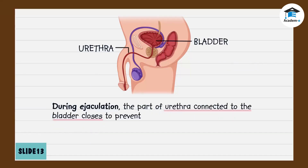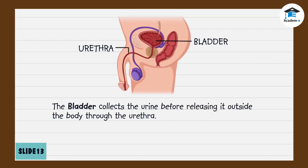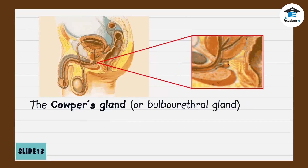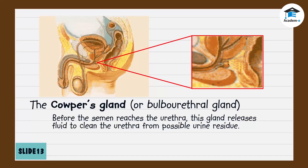During urination, the part of the urethra connected to the prostate gland closes so that urine cannot enter the prostate gland. During ejaculation, the part of the urethra connected to the bladder closes to prevent semen from entering the bladder. Also, another part of the male reproductive system, called the Cowper's gland, releases fluid before the semen reaches the urethra to clean it from possible urine residue.